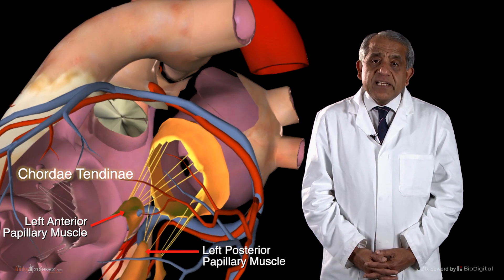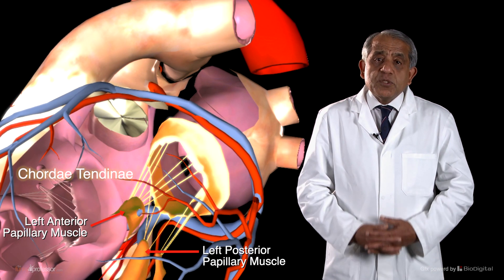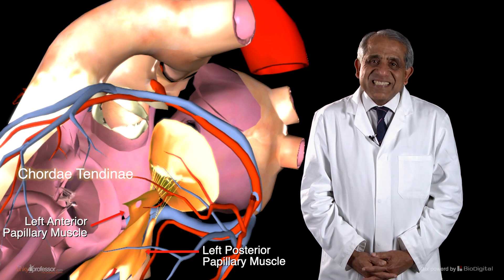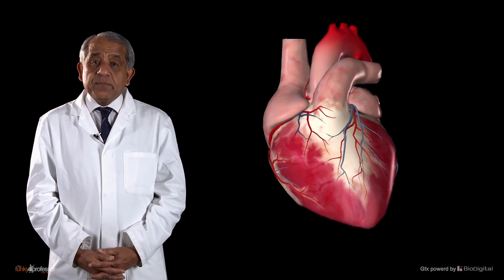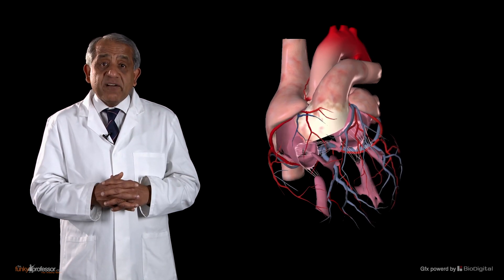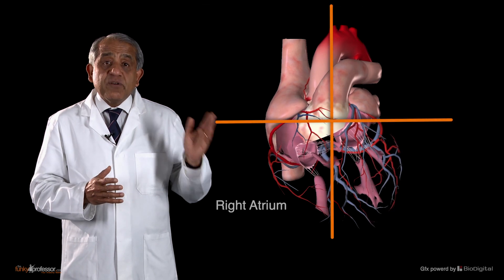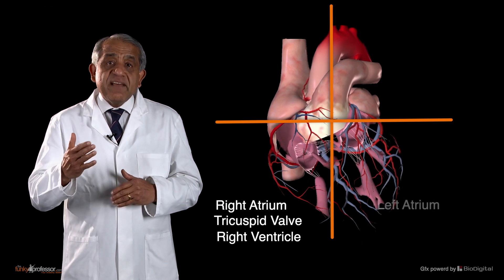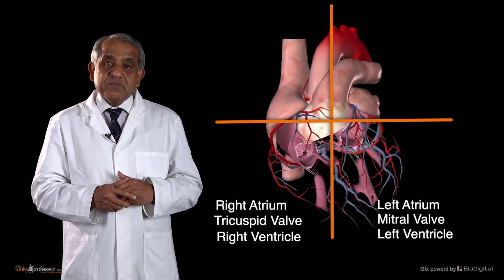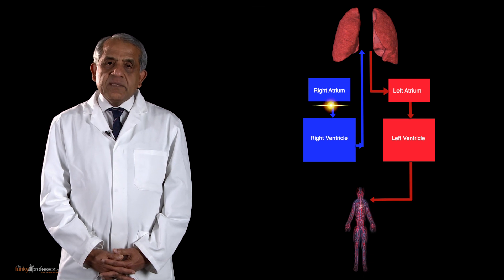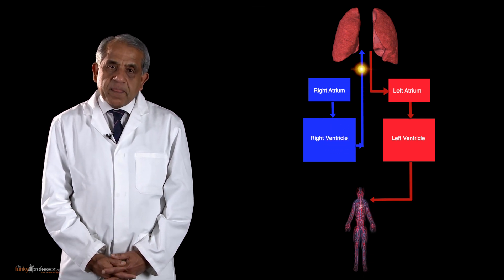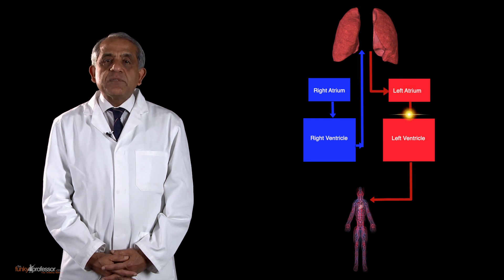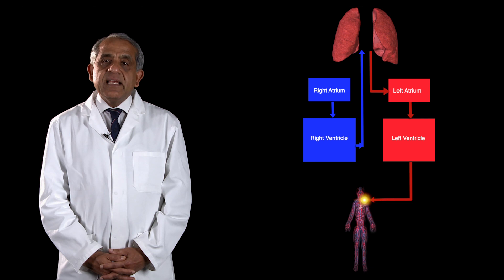The chordae tendineae in the left ventricle perform the same function as those in the right ventricle — they prevent the cusps of the mitral valve from prolapsing into the left atrium when the left ventricle contracts. So, having looked at all four chambers, we see there are two pumps working in parallel: the right pump comprising the right atrium and right ventricle with the tricuspid valve between them, and the left pump comprising the left atrium and left ventricle with the mitral valve between them. The right heart pumps blood into the pulmonary circulation, and the oxygenated blood from the two lungs returns to the left heart, which subsequently pumps it to the entire body — head, neck, limbs, and trunk.